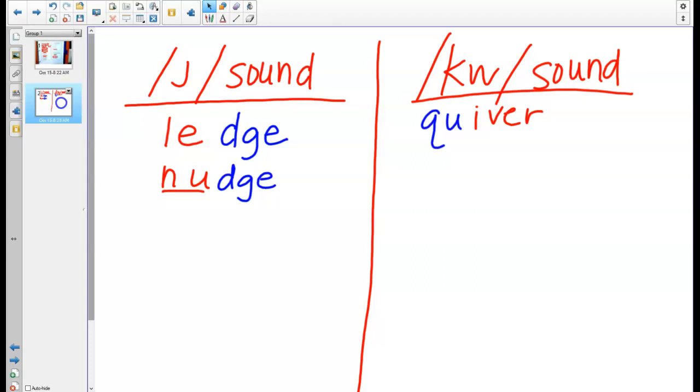So you have seven of the /j/ sound, /kw/ there's five, so only thirteen or twelve letters, or twelve words that you need to write today. Make sure you spell them correctly, that's the whole point of this. Are there any questions before we start?